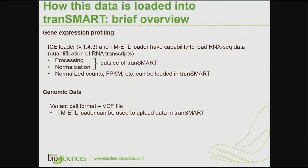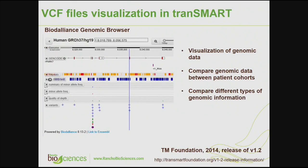For variant call format or VCF files, we have TM ETL loader that can be used to load this kind of data into Transmart. Back in 2014, the Transmart Foundation announced a release of Transmart version 1.2 and they integrated Dalian's genomic browser with Transmart. Here is a screenshot of this genomic browser. It allows you to visualize genomic data, compare genomic data between patient cohorts, and compare different types of genomic information.